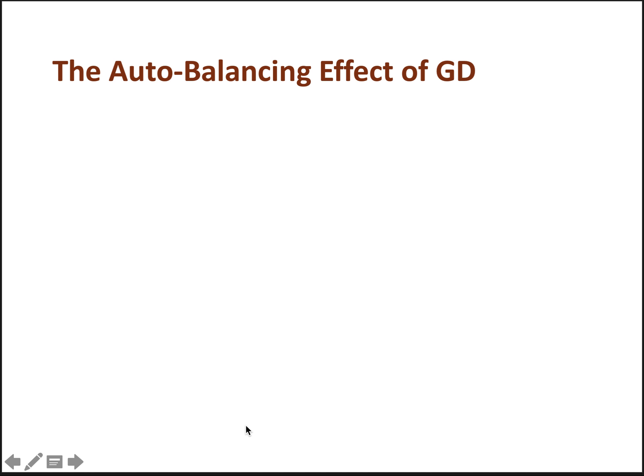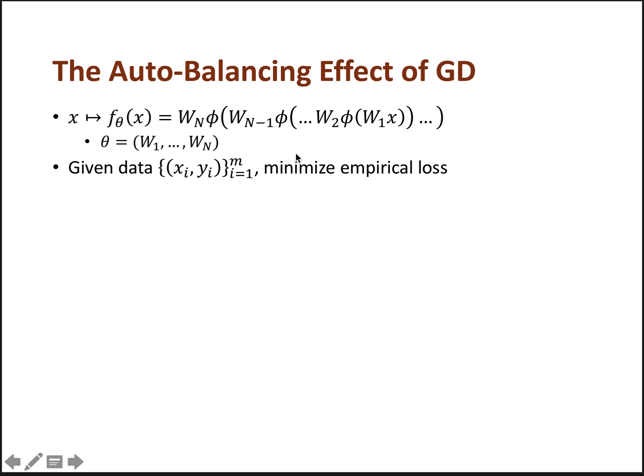So in this work, we give a theoretical explanation of this phenomenon. We show that gradient descent can have an auto-balancing effect in learning deep homogeneous models. Now let's go back to the deep neural network with ReLU activation. And I just defined theta to be the collection of all the parameters in the network.